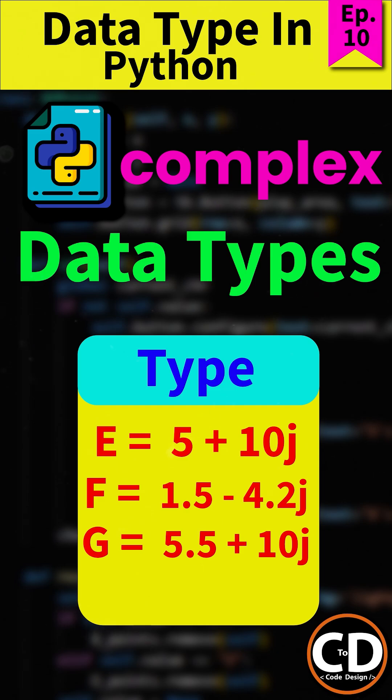Now, both the real and imaginary parts can be integers or floats, but by default, Python treats them as floats internally.